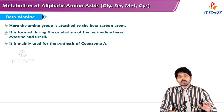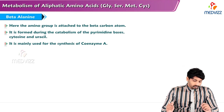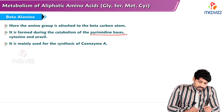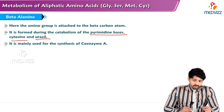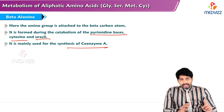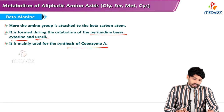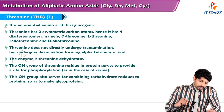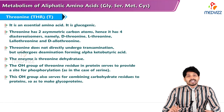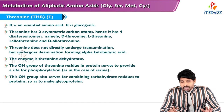Beta-alanine has the amino group attached to the beta carbon atom. It is formed during the catabolism of pyrimidine bases — cytosine and uracil — and is mainly used for the synthesis of coenzyme A.